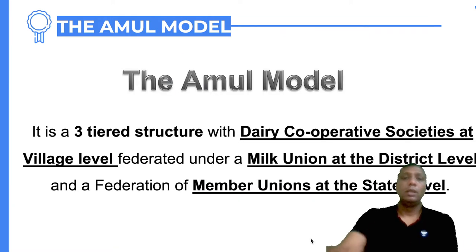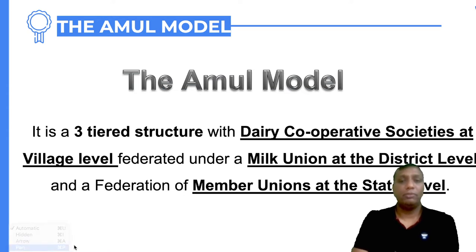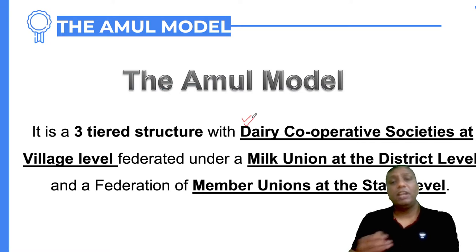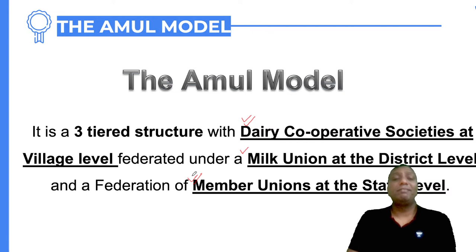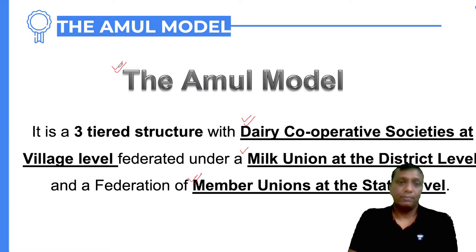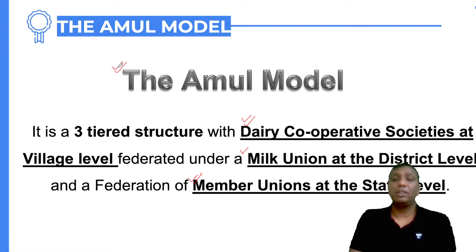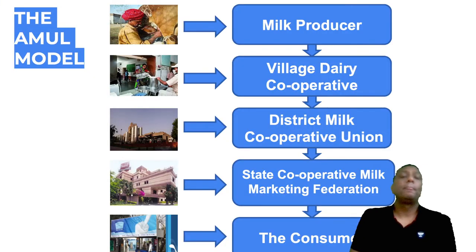The Amul model has a three-tier structure. At the village level, a dairy cooperative society works. From the village level it reaches the district level, where a milk union is set up. At the state level, a member union is set up. This is the three-tier structure under the Amul model, ensuring the whole milk procurement reaches the root level under proper management — with no intermediaries and no exploitation of farmers.